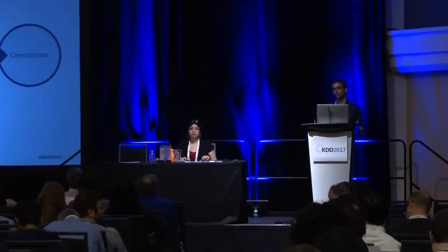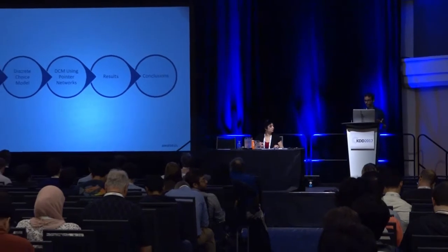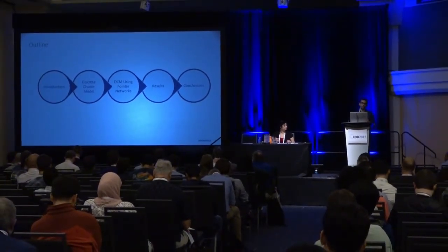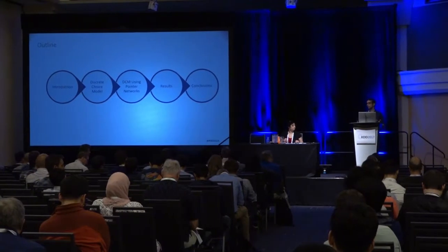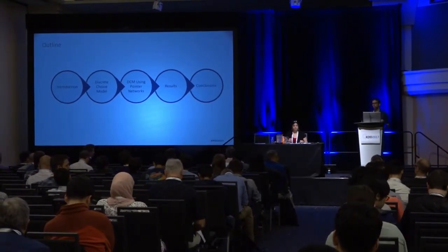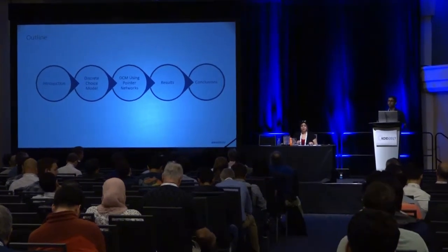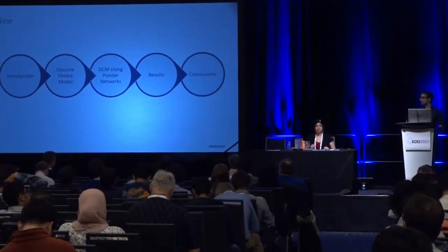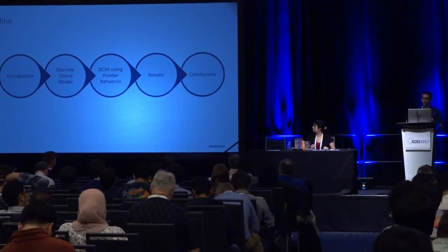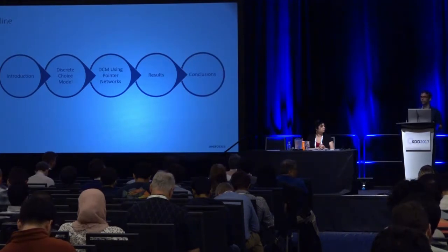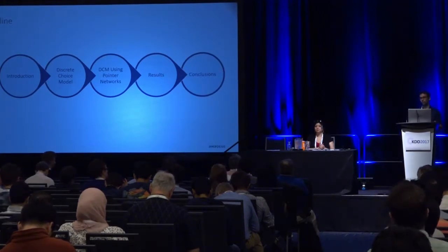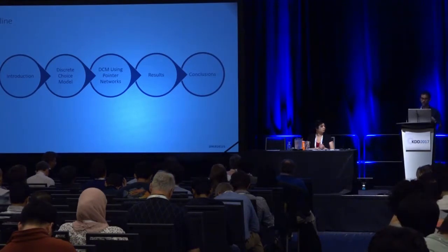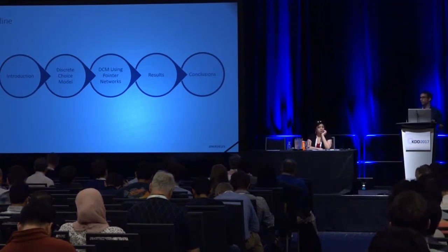This is just an outline of my presentation. I'm going to start with a brief introduction where I discuss the problems that we're trying to solve, then go briefly through the typical solution used in the travel industry called the discrete choice model, then talk about what we propose — using deep learning, in particular pointer networks — then the data used for validation, which is real bookings and search logs, and show results comparing our method against MNL, machine learning-based methods, and some heuristics, then wrap up with conclusions.